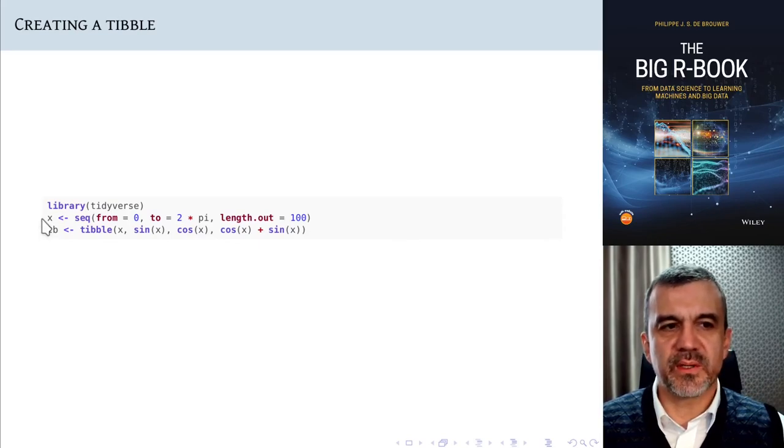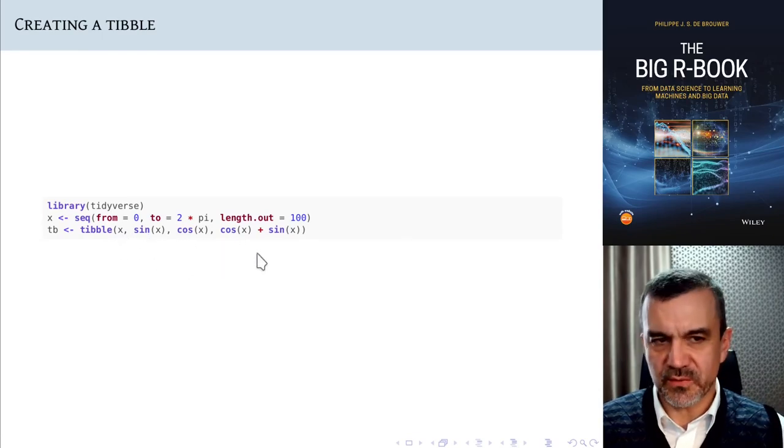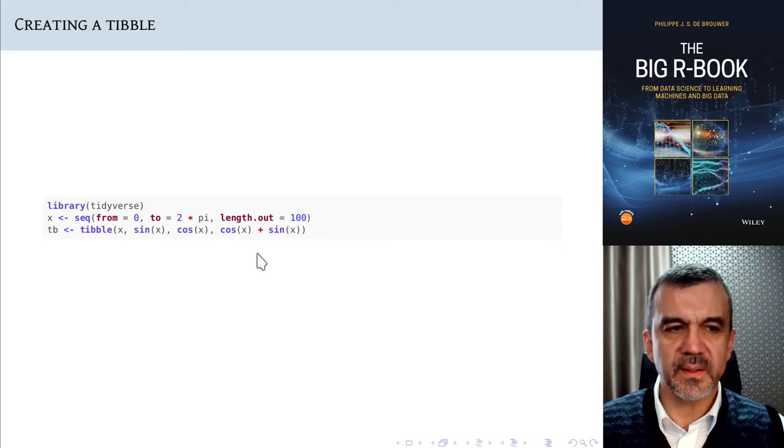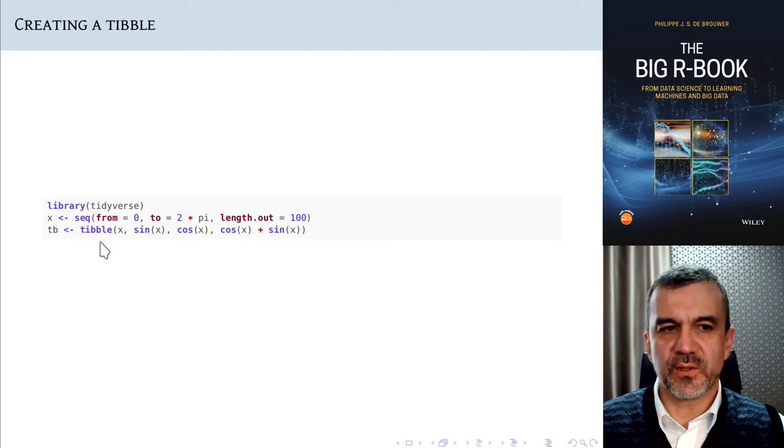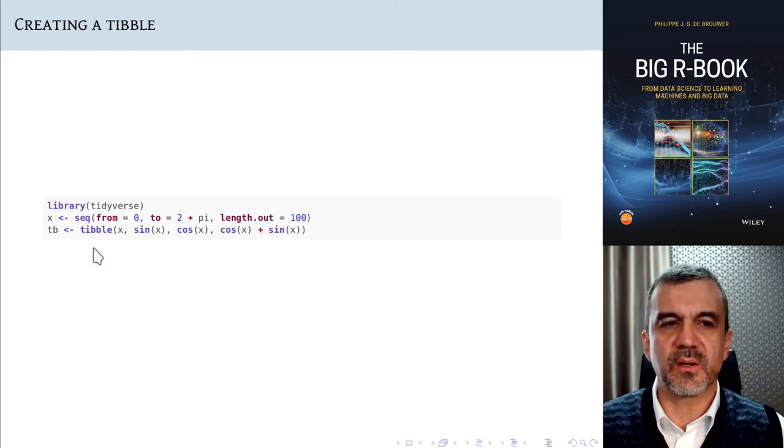First we create a vector x, and then we create a tibble with different columns, and we have the sine, the cosine, and the sum of both of those. Just as the function data frame, you can use the function tibble to create your tibble. And now we have our first tibble.